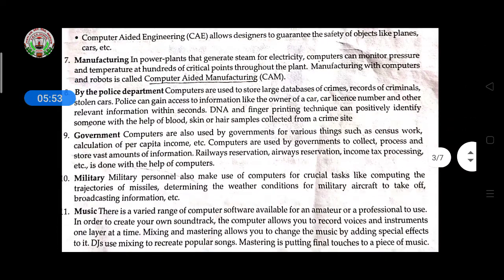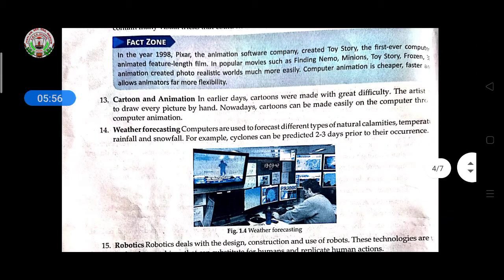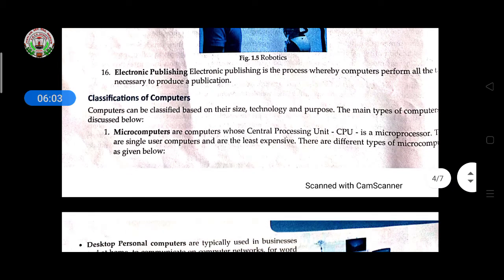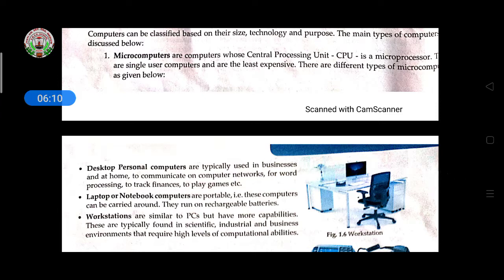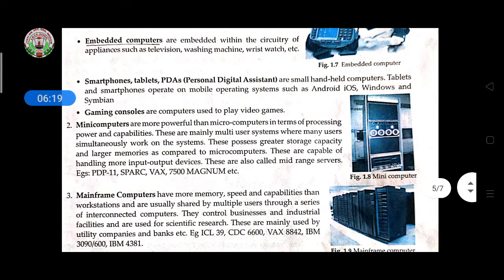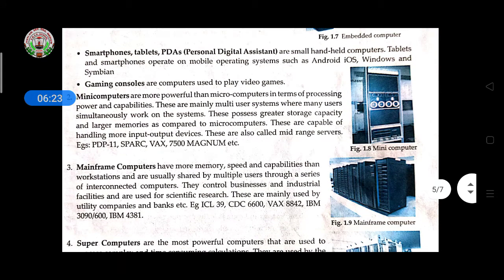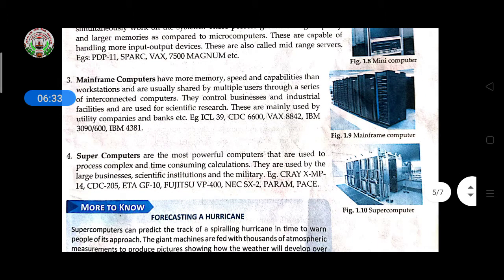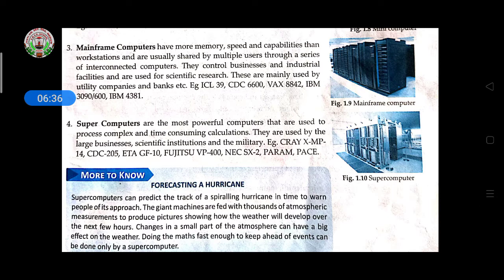Classification of computer. Microcomputers are whose central processing unit is microprocessor. It is for single user and is least expensive. Different microcomputers are desktop, laptop, workstation, embedded computer, smartphone. Mini computer - more powerful than microcomputers in terms of processing power and capabilities. Mainframe computers have more memory, speed and capabilities. Workstation and supercomputer are most powerful computers that are used to process complex and time-consuming calculations.